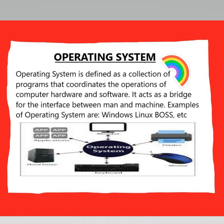Operating system — what is an operating system? An operating system is a collection of programs which controls the functions of hardware and software, coordinates and supervises. It is also a program which works as an interface between the user and hardware.